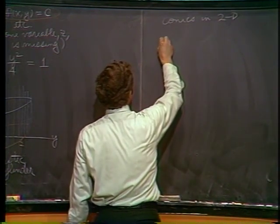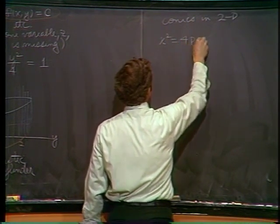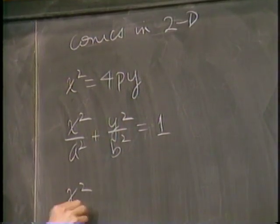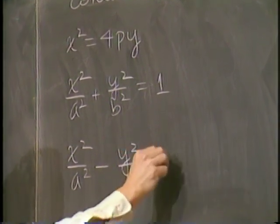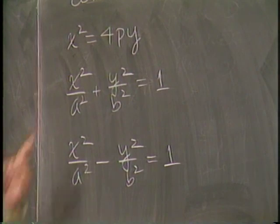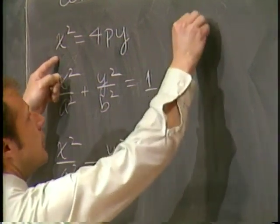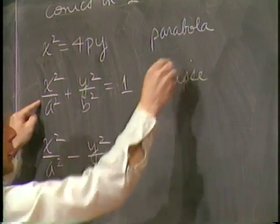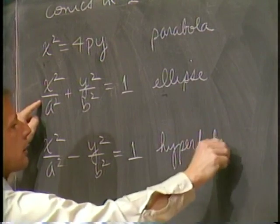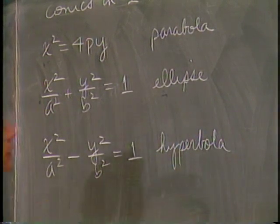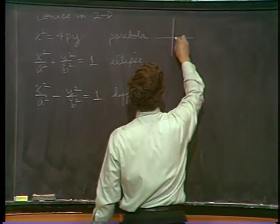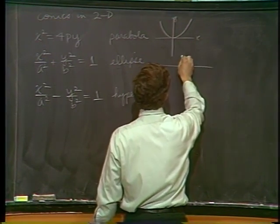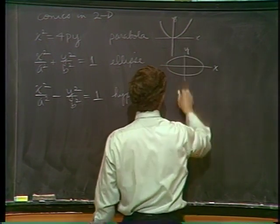The conics that we looked at, for example, something like this: x squared is 4PY. X squared over A squared plus Y squared over B squared equals 1. And X squared over A squared minus Y squared over B squared equals 1. Now, this is sort of like a multiple choice question. What is that? Parabola. This one? Ellipse. Good. And hyperbola. Let me just give you a fair sketch of what they're supposed to be like. Not necessarily all of them look this way, but there's your parabola, XY plane. Here's an ellipse. And your hyperbola.